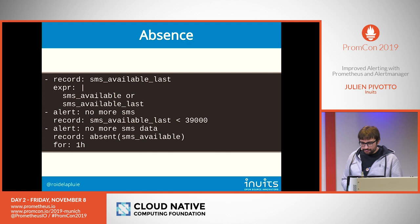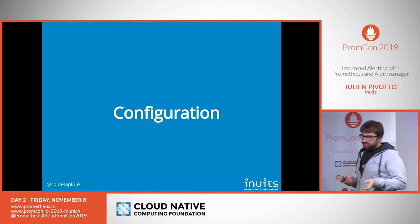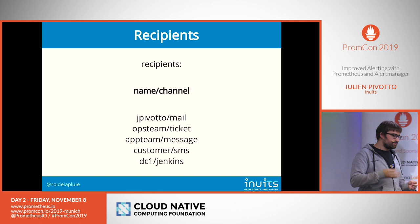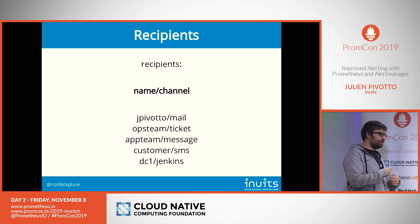Now, what can you do with your alert manager? We have a naming convention for recipients. You always have a receiver with a name slash a channel — like 'jpvoto/mail', 'ops_team/ticket', that kind of thing. We have a limited number of channels and we know the recipients up front, so you always know where your alert will go and which channel is used.